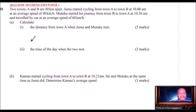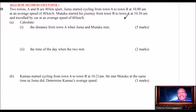Here we have question number 20. Two towns A and B are 80 kilometers apart. Juma started cycling from town A to town B at 10 a.m. at an average speed of 40 kilometers per hour.